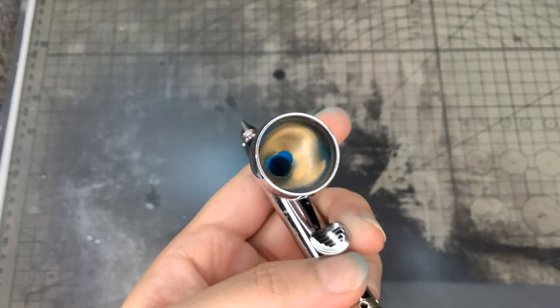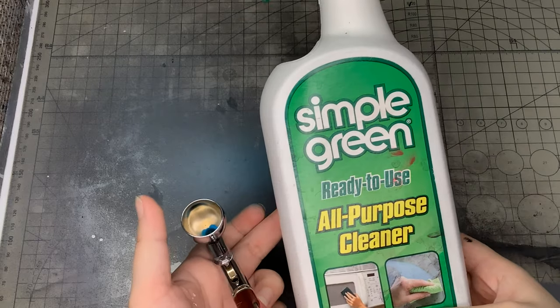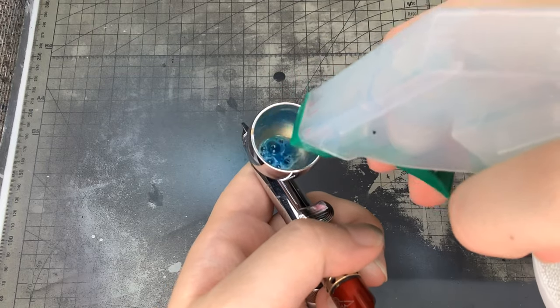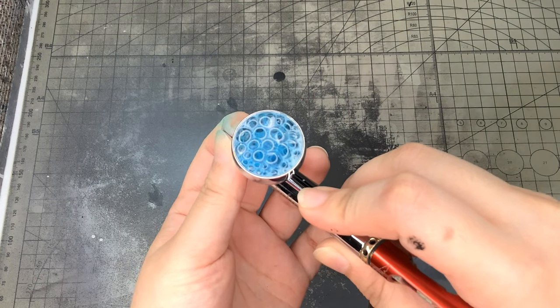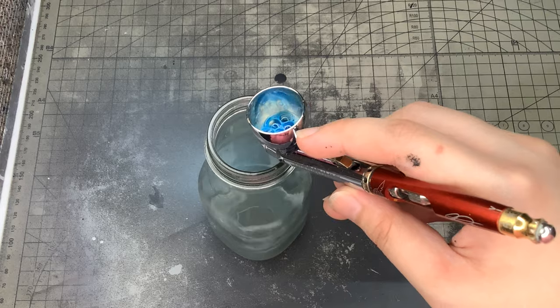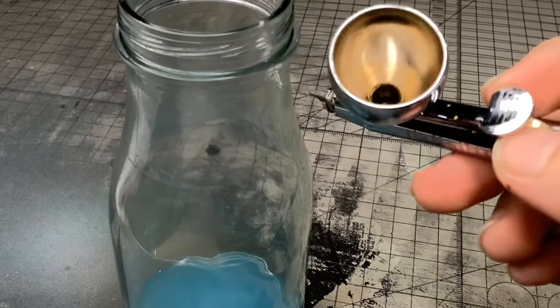Now, I'm going to use Simple Green. You can use whatever glass cleaner to clean up. Just make sure it's ammonia-free. If not, it will dull the finish of your airbrush. Maybe I am biased since I love Simple Green as a cleaner, but I feel that it works better than just using water.